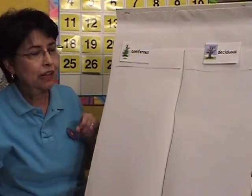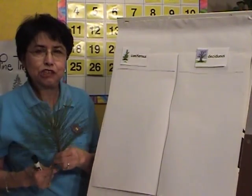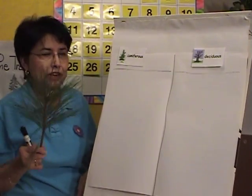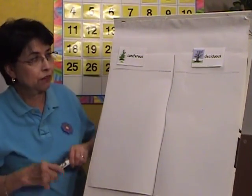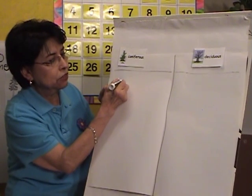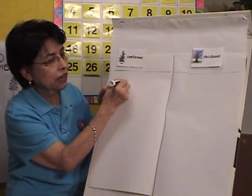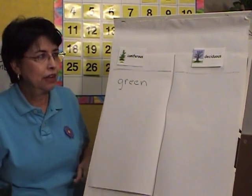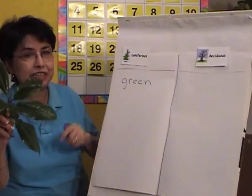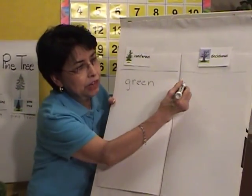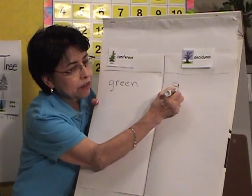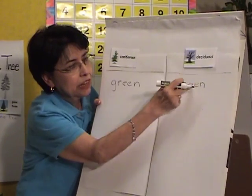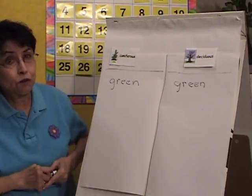Let's start with the coniferous. Tell me one thing you want to start with. What is one thing you would say about the coniferous? They're green. Very good. They are green — G-R-E-E-N. Now, can you say that about the deciduous? Yes, they are green. G-R-E-E-N. They are both green, of course.